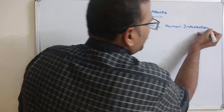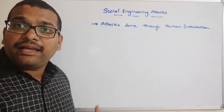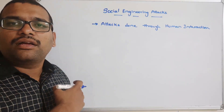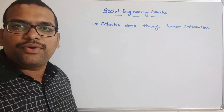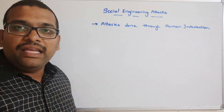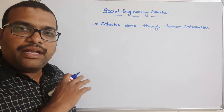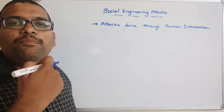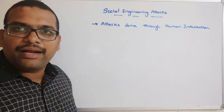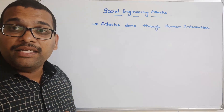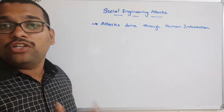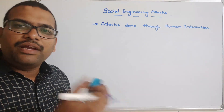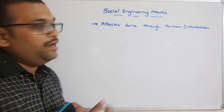Previously we have seen different types of attacks where the attacker will take control of the victim's system and gain all the information from it. But here, the attacker will not take control of the victim's system — the victim itself will provide his or her data to the attacker. Some sort of psychological manipulation will be done on the users to get the information from them.